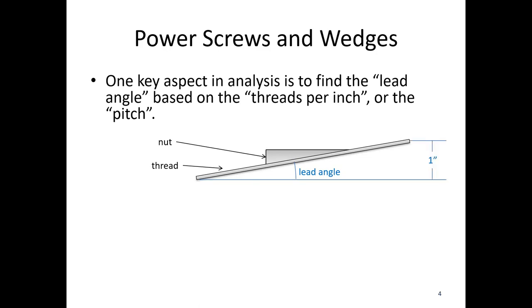One way to do that is, in the US customary system, we're usually given threads per inch. So in one inch of vertical travel, I would go around so many circumferences. So one circumference is pi times the shaft diameter, so that's the circumference of one revolution of the shaft.